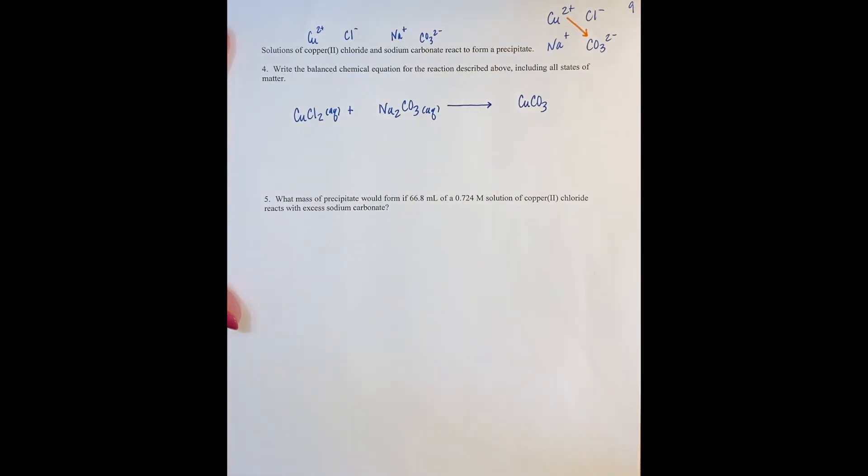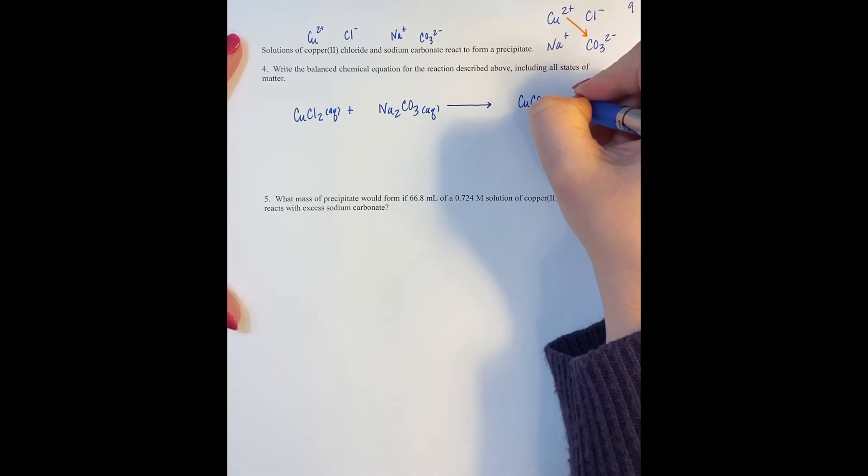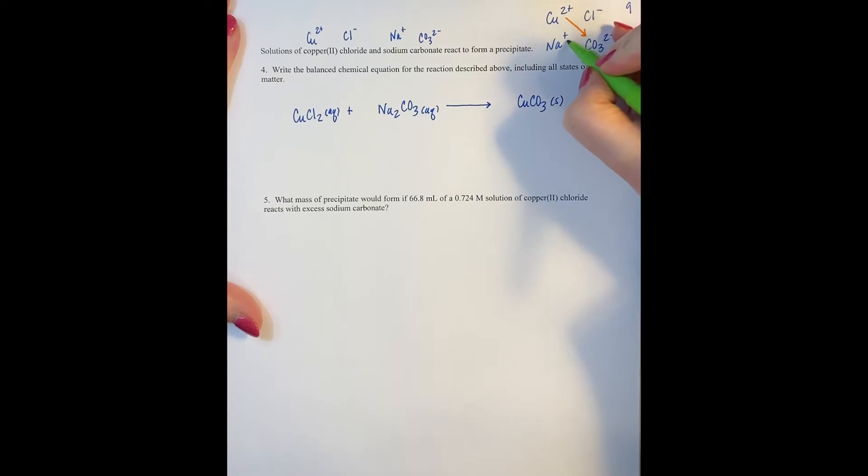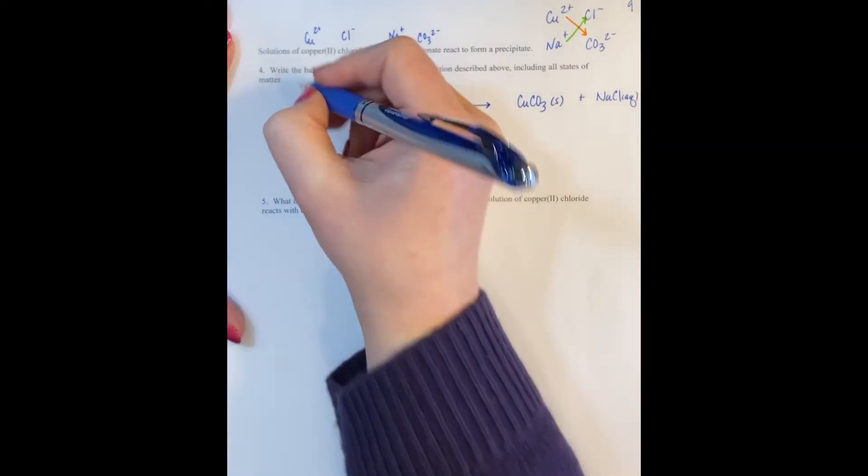When you look at your solubility rules, you see that carbonates are generally insoluble, and copper is not an exception. So CuCO3 is going to be the precipitate in our reaction, meaning it will have a solid state of matter in the balanced chemical equation. For the opposite pairing, we have sodium and chloride — sodium chloride is a soluble ionic compound, so NaCl is the other product with an aqueous state of matter. To balance the equation, we need a coefficient of 2 in front of sodium chloride, giving us an overall balanced chemical equation.